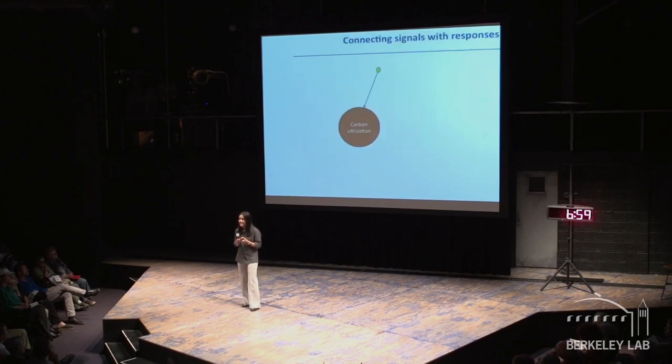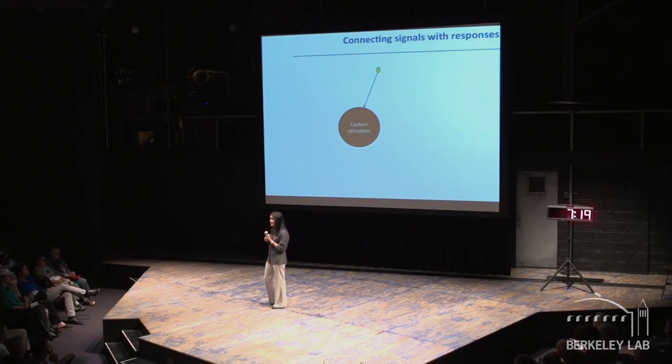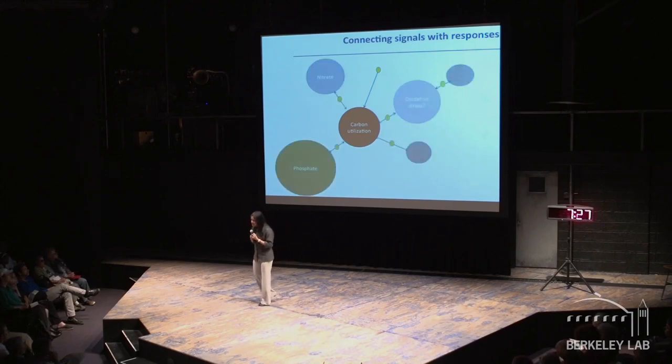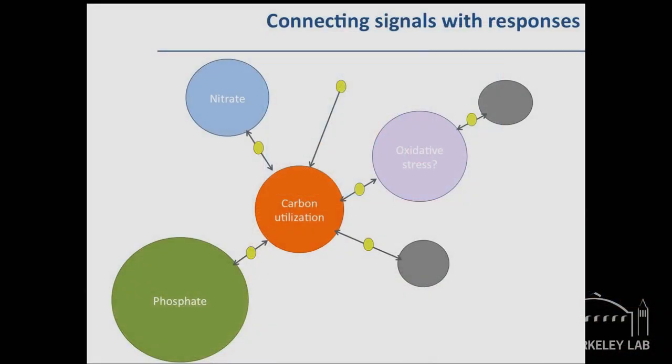What that does is it gives us connection between the environment and this organism. We can now know that the carbon utilization of this organism relies not only on the ability of this organism to sense whether carbon is present or not, but also on nitrate stress, phosphate stress, oxidative stress, and two other unknown stresses we quite haven't figured out yet. What this gives us is an ability to know what the environment means to this organism. What is the connection? How does it see its environment? And when something dramatic changes in that environment, how will it respond?